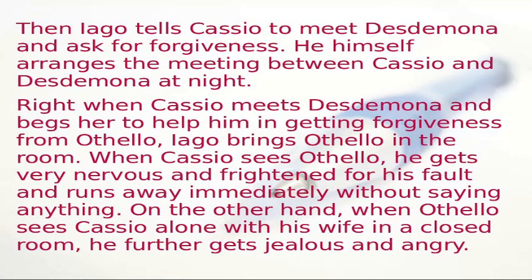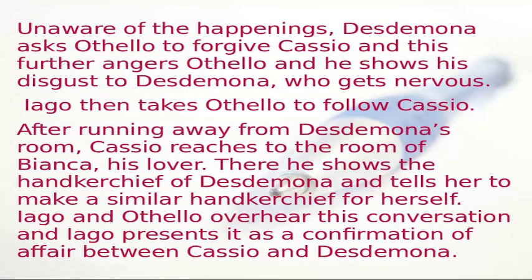Iago tells Casio to meet Desdemona and ask for forgiveness, and arranges the meeting between them at night. Right when Casio meets Desdemona and begs her to help him obtain forgiveness from Othello, Iago brings Othello into the room. When Casio sees Othello, he gets very nervous and frightened and runs away immediately. When Othello sees Casio alone with his wife in a closed room, he grows even more jealous and angry. Unaware of what is happening, Desdemona asks Othello to forgive Casio, which further angers him, and he shows his disgust to Desdemona.